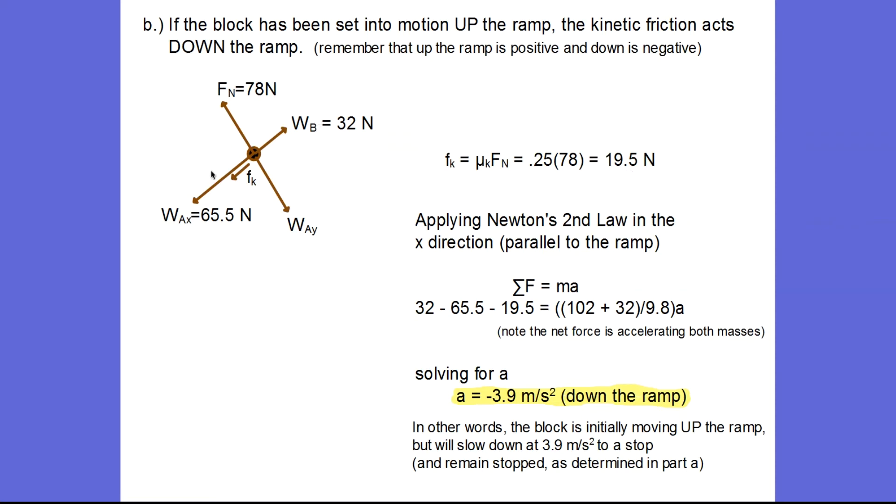Now I'm going to look at these forces in the x direction, that's parallel to the ramp, and use Newton's second law. The sum of the forces: 32 is in the positive direction, 65 and f_k or 19.5 are in the negative direction. Sum those up and divide by the mass of the system. The mass is the total amount of mass that's being accelerated by all of these forces, so that is both blocks. They give us the weight of the blocks, so total weight divided by 9.8 is the mass. When you solve for a, you get negative 3.9. Down the ramp is negative, so that's the direction of my acceleration. Since the block is initially moving up the ramp and acceleration and velocity are in opposite directions, that means the object is slowing down.